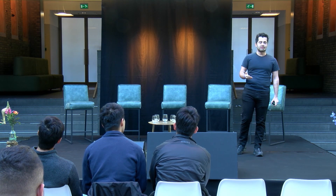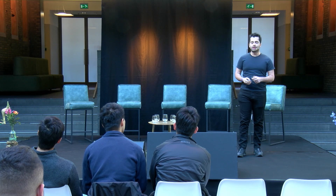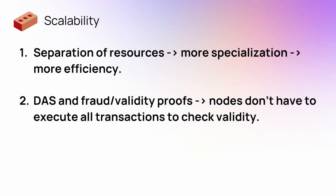For example, on the data availability layer, the nodes don't do any computation — they just do data availability. And that means they can optimize their resources to having high bandwidth rather than computation, and they can be specialized just on that one task.